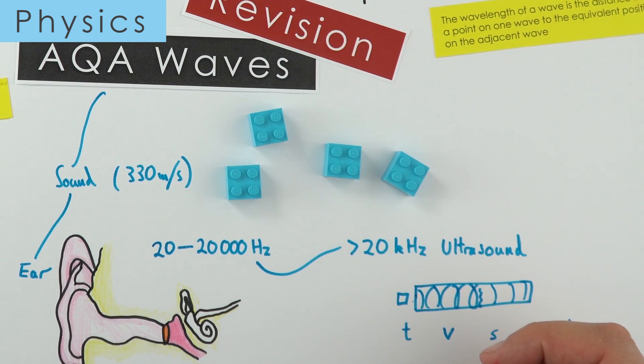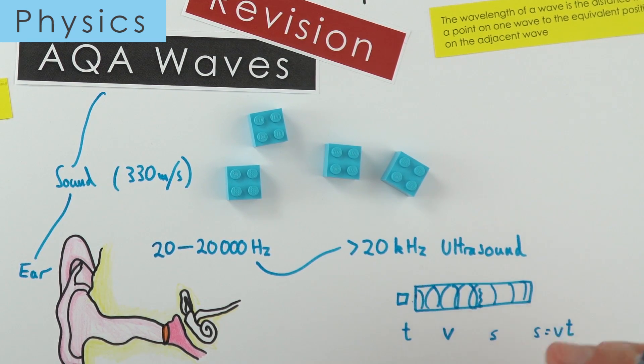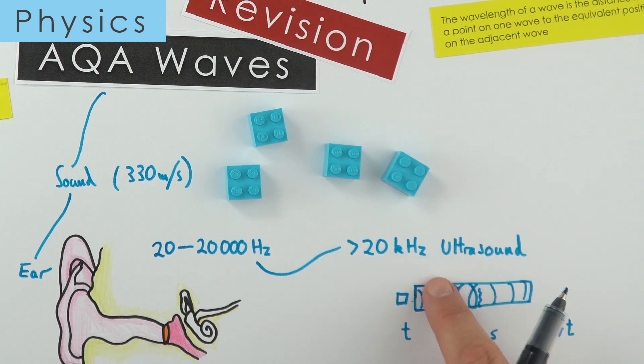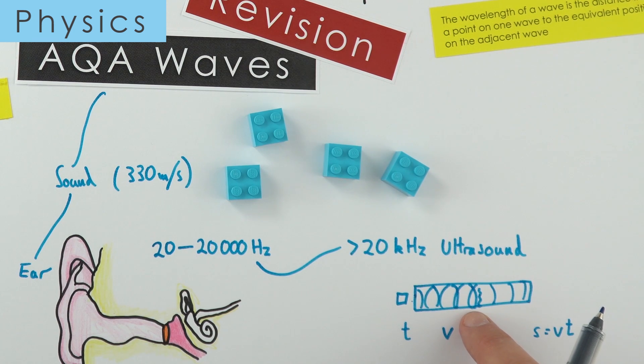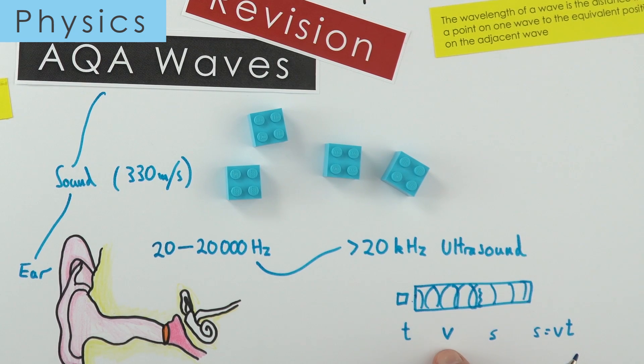The same things work if we're looking at inside mummy's tummies, scanning babies. Because these are completely safe, we get a partial reflection from the baby inside the mother, and that allows us to build up a picture of what that baby looks like and check how they're developing properly, and also if it's a boy or a girl.